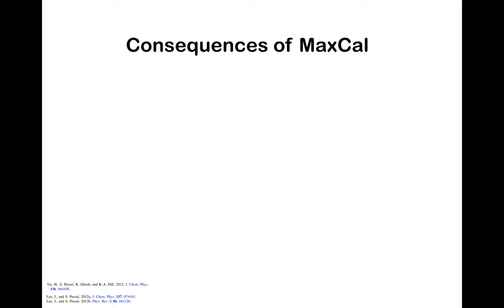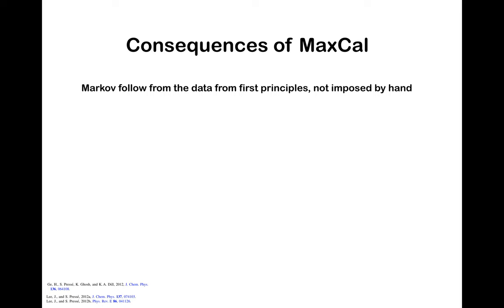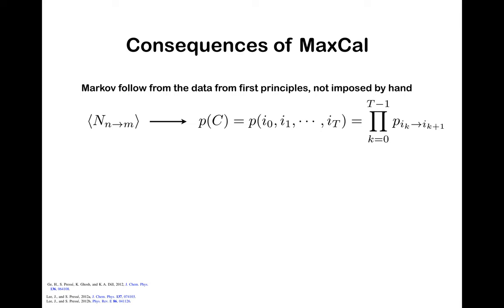What are some consequences of the principle of maximum caliber? First, Markov processes can now be seen as following from data from first principles, if warranted by the data — they need not be imposed by hand. If we measure the number of transitions between states and apply maximum caliber to infer a probability distribution of trajectories, we find those trajectories naturally factorize in a product form — the hallmark of a Markov process.